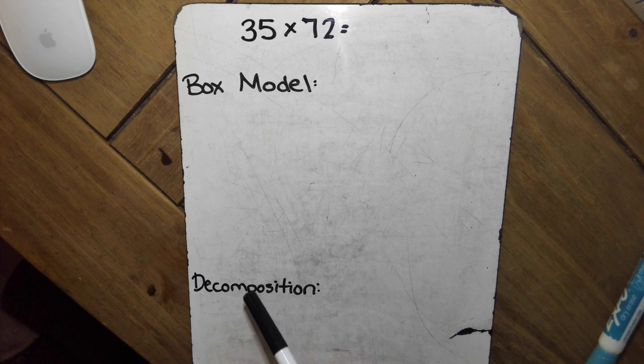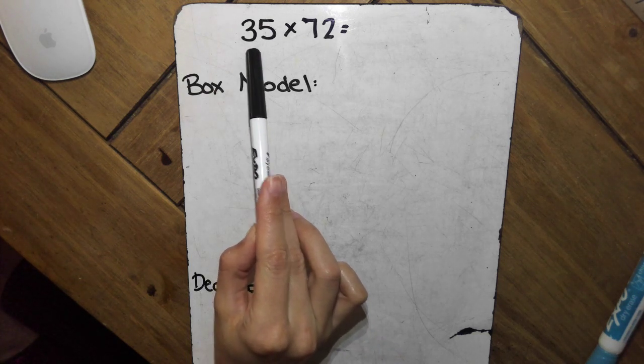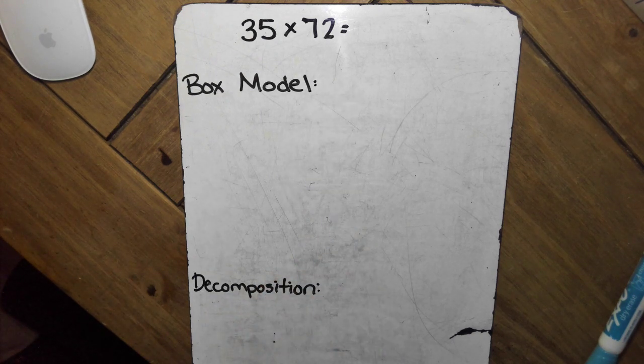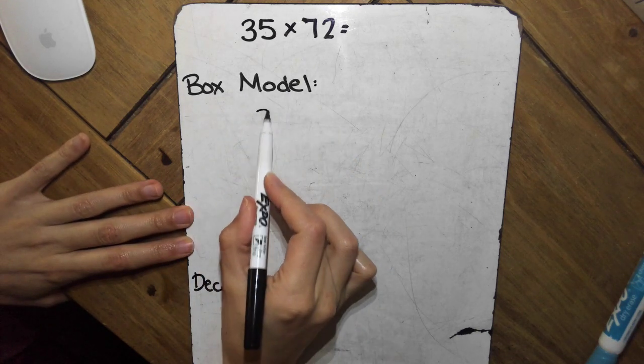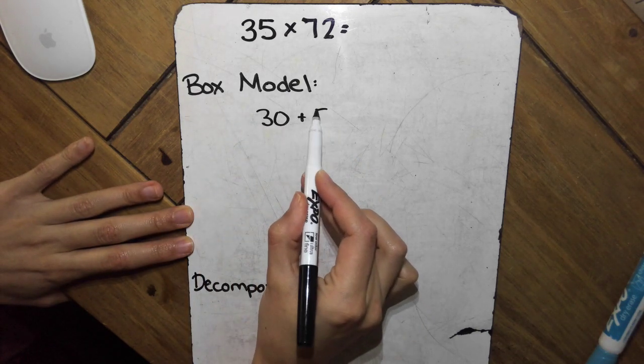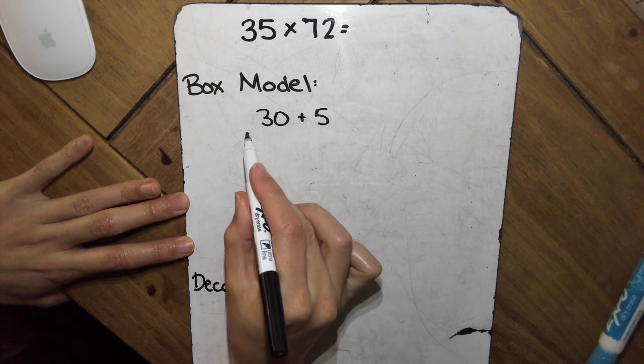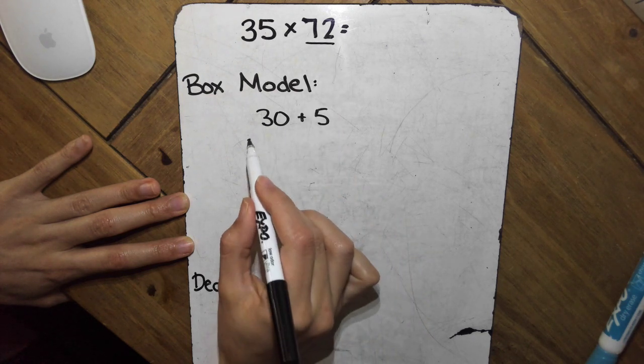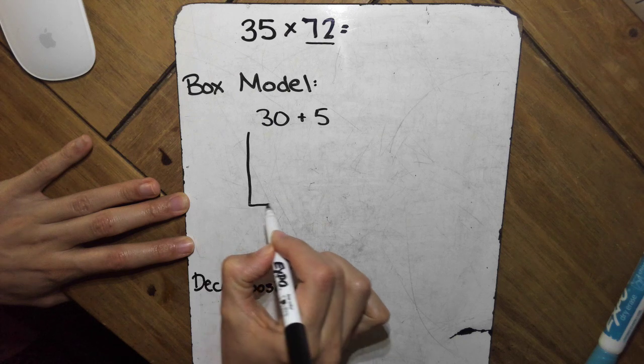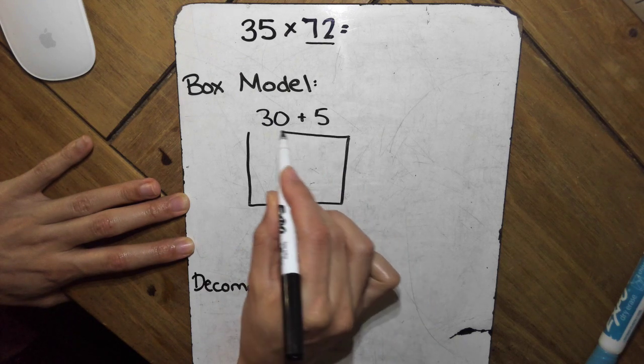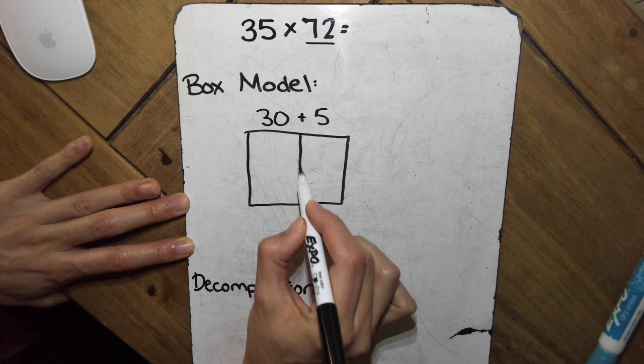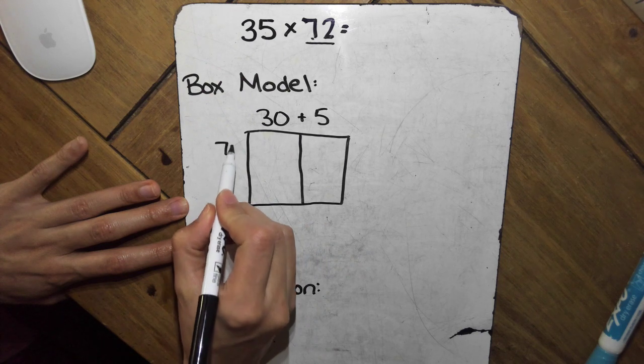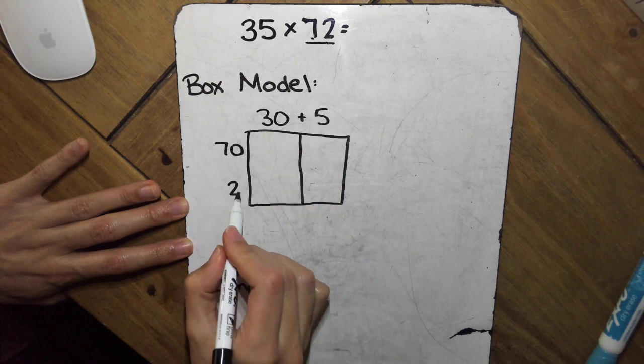So the first step in the box model is to take each factor and put them in expanded form to see the value of each of the digits. So the first number 35, we have the 3 is worth 30, plus the 5 ones. And then our next number I'm going to put along the side, because what we're doing with the box model is showing it as an area of a box to keep it nice and organized. So along the side, I have 7 tens, or 70, plus 2 ones.